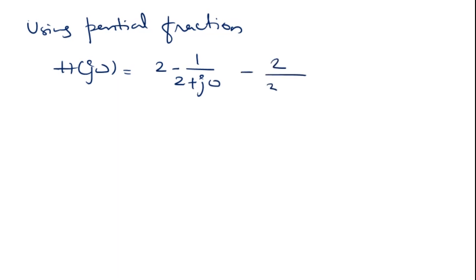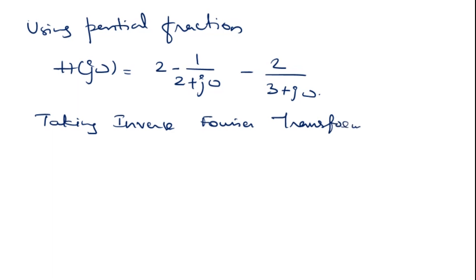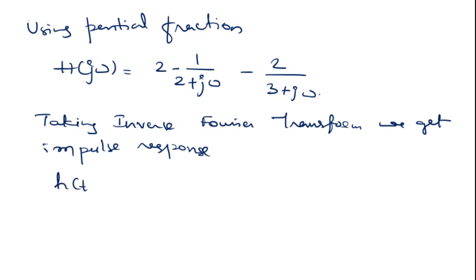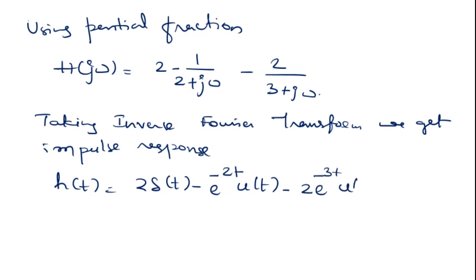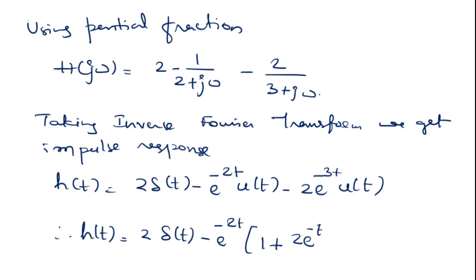This simplifies, and taking the inverse Fourier transform, we get the impulse response h(t) = 2δ(t) − e^(−2t) u(t) − 2e^(−3t) u(t). Therefore, h(t) = 2δ(t) − e^(−2t)(1 + 2e^(−t)) u(t).